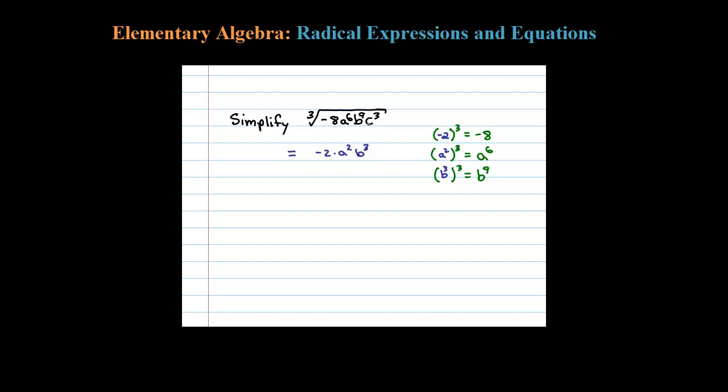And then finally, what cubed is equal to C cubed? And the answer there is just C. So there's your answer for this cube root: negative 2 a squared B cubed times C.